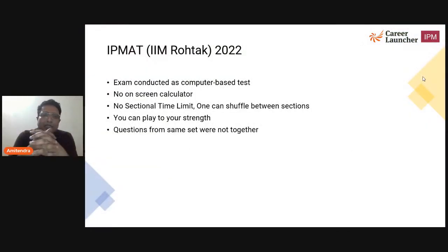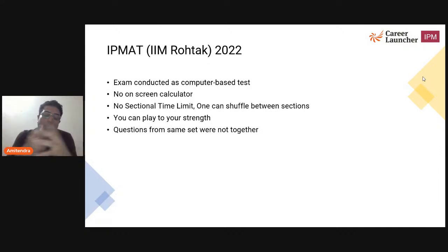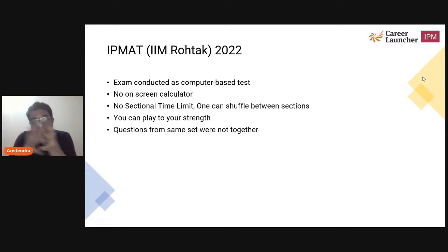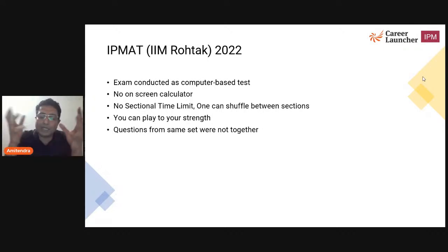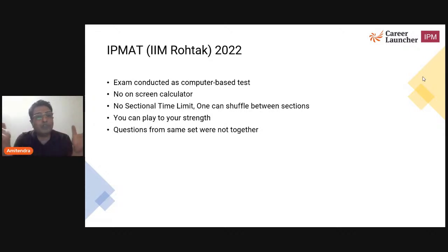The paper was a computer-based test conducted between 2 to 4 p.m. today. But there were three big surprises. One was there was no on-screen calculator provided. As per the official communication, it was expected that the mathematics section — the quantitative aptitude section — would definitely have an on-screen calculator. But the most important change or surprise for students was the section time limit — that element was completely missing.